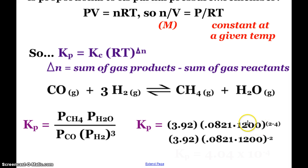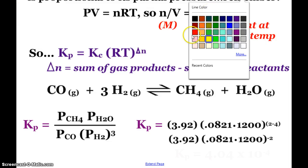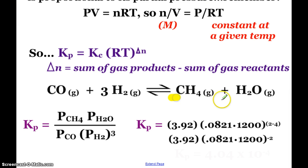And my ideal gas law constant in atmospheres is 0.0821. There are 2 moles of gaseous products and 4 moles of gaseous reactants. So 2 minus 4 is negative 2. So mathematically, when I plug and chug, that's my Kp value.